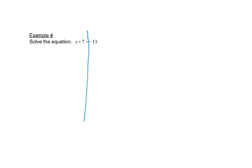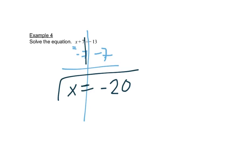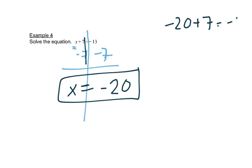For this problem I'm going to draw my line straight down. I look on my left where x is, and it says plus seven. The opposite of plus seven is minus seven, so I'll subtract seven from both sides. This cancels out and leaves me with just x. Negative thirteen minus seven is negative twenty. I can check that — putting negative twenty in place of x, negative twenty plus seven gives negative thirteen. It checks.